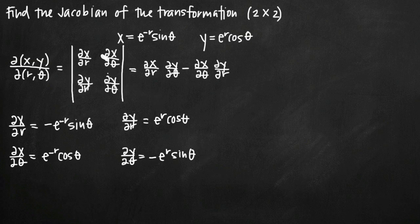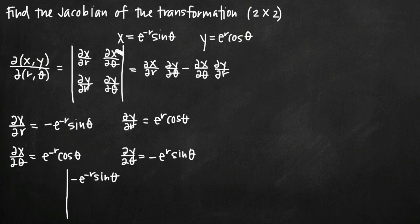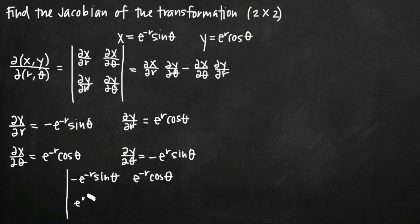Now we plug the four partial derivatives into our matrix. In the upper left corner we place the partial derivative of x with respect to r: negative e to the negative r sine theta. In the upper right, the partial derivative of x with respect to theta: e to the negative r cosine theta. In the lower left, the partial derivative of y with respect to r: e to the r cosine theta. In the lower right, the partial derivative of y with respect to theta: negative e to the r sine theta.